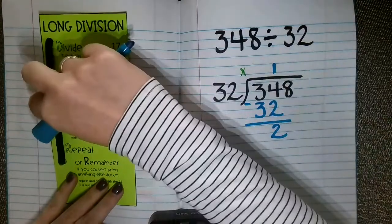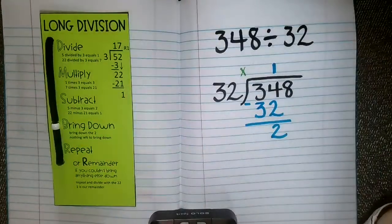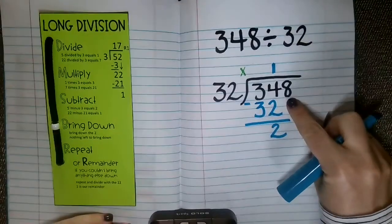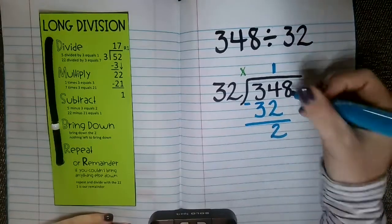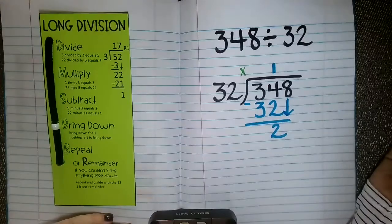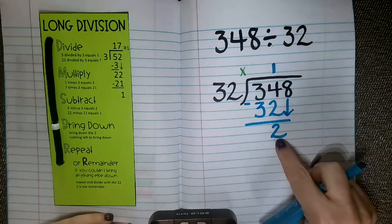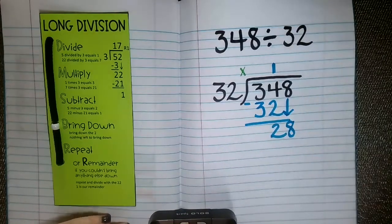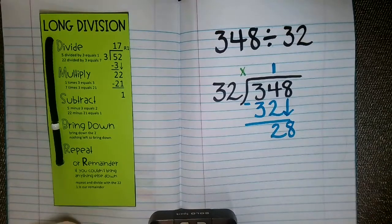All right. Moving right along, I'm going to move my bead. And my next step is to bring down. So the only number that I have left is this 8 here in my ones place. So I'm going to bring this 8 down, and that makes this no longer a 2, but that makes this number a 28.